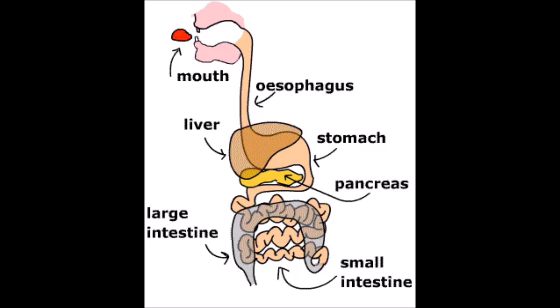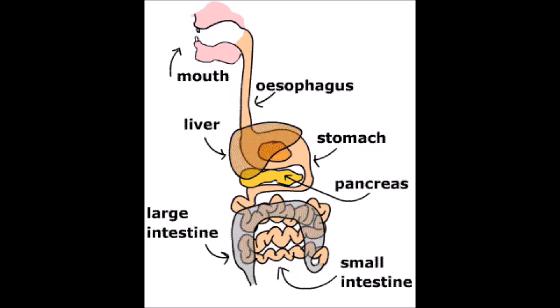The alimentary canal consists of the following organs: the buccal cavity or oral cavity, the pharynx, the esophagus, the stomach, the small intestine, the large intestine, and the anus.